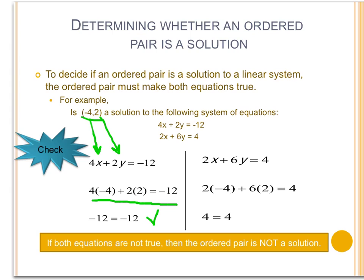Next, we must show that when plugging the point in to the second equation, that the statement is also true. So we plug negative 4 in for x and 2 in for y. We get 2 times negative 4 plus 6 times 2 equaling 4, and 4 does equal 4.